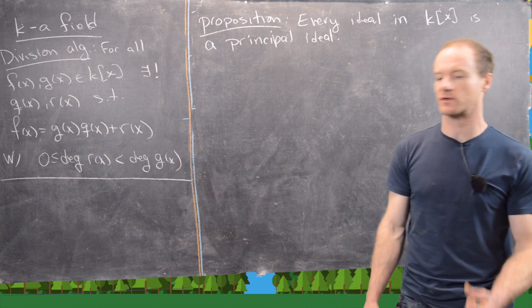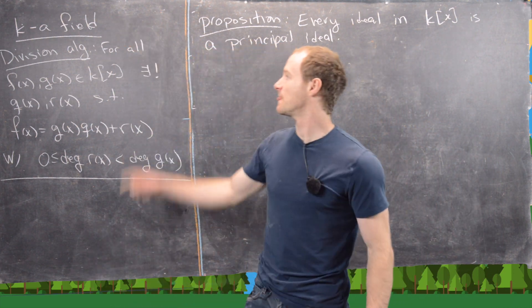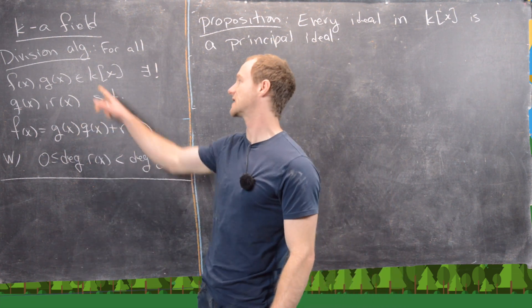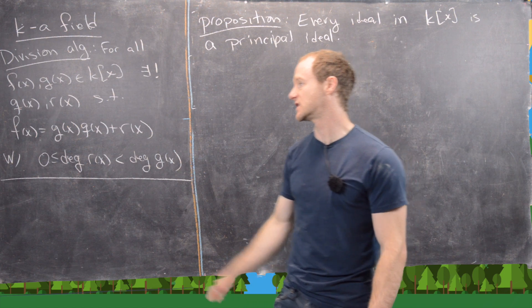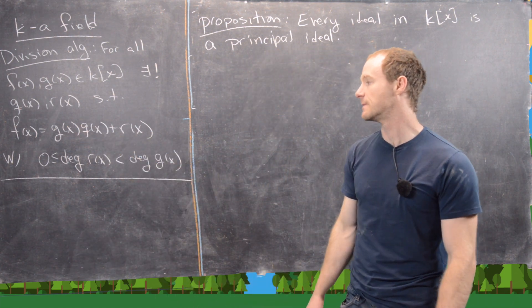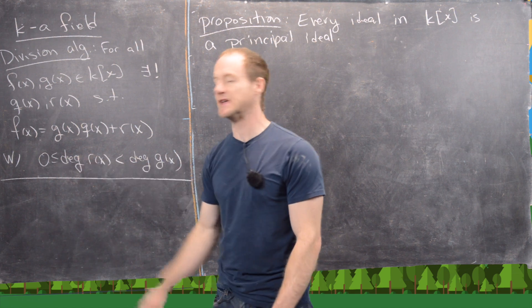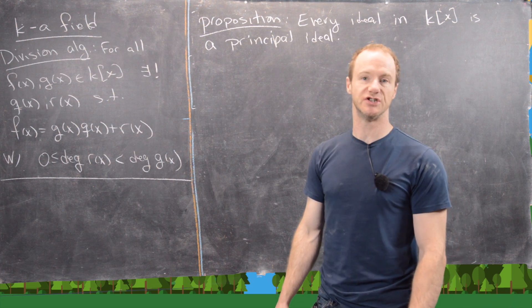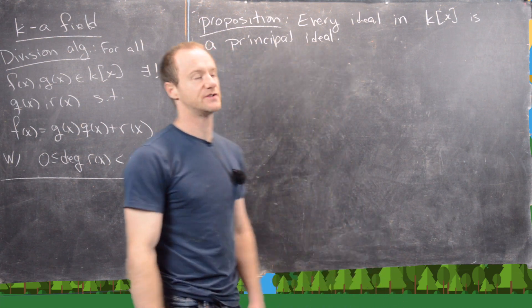Let's recall the division algorithm, which is going to be a really important tool in this proof. So let's say we've got K as a field. The division algorithm says that for all polynomials f(x) and g(x) in K[x], there exist unique q(x) and r(x) such that f(x) = g(x)·q(x) + r(x), and the degree of the remainder is either 0 up to the degree of g(x) but strictly less than the degree of g(x). Compare that to the division algorithm with integers and you see a nice parallel.